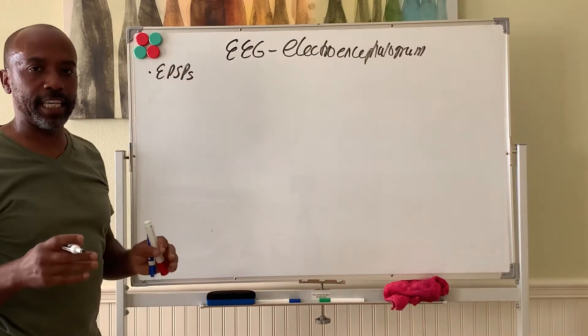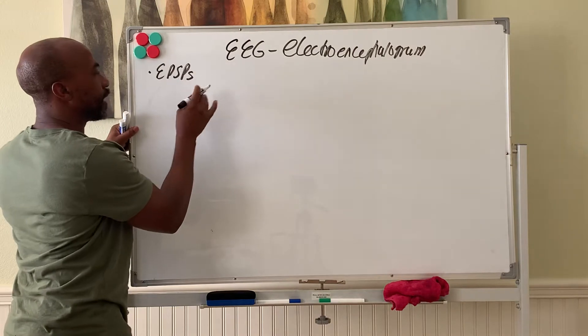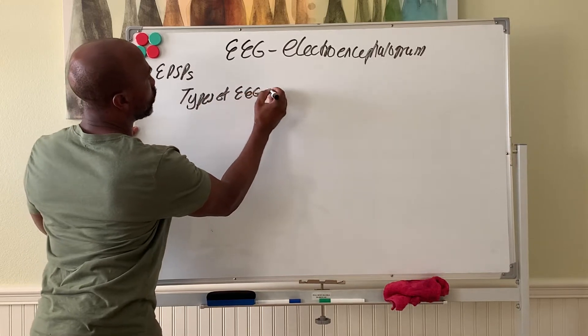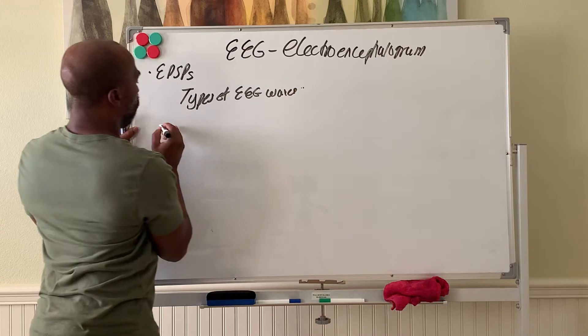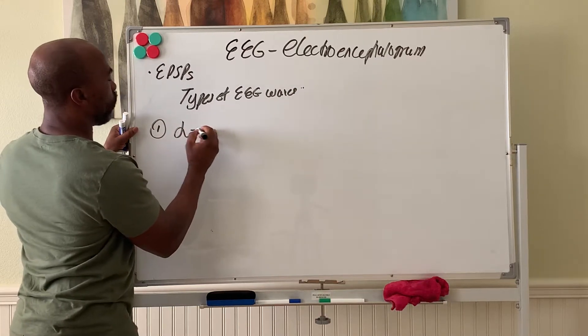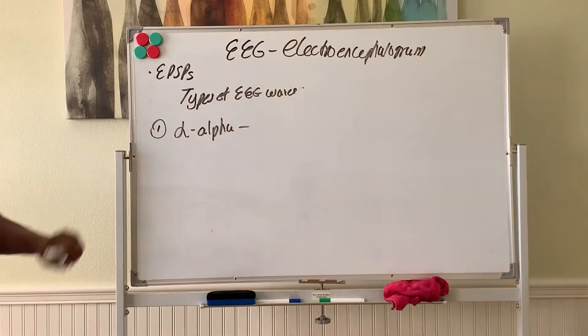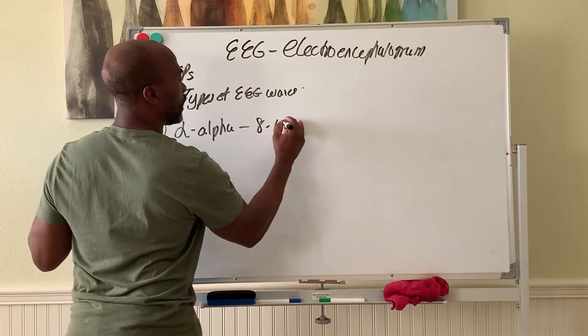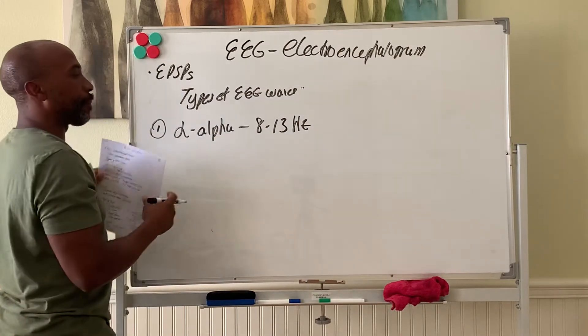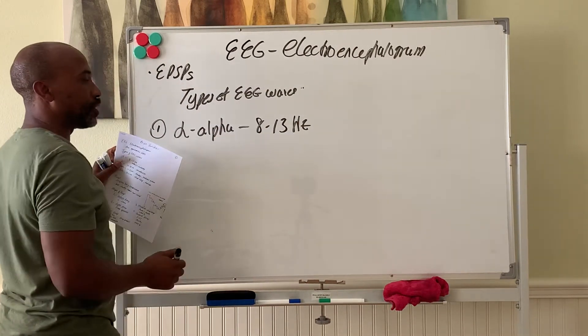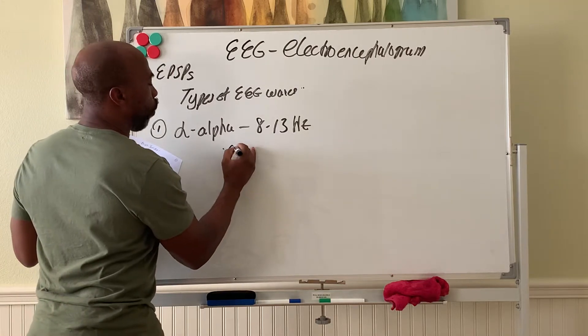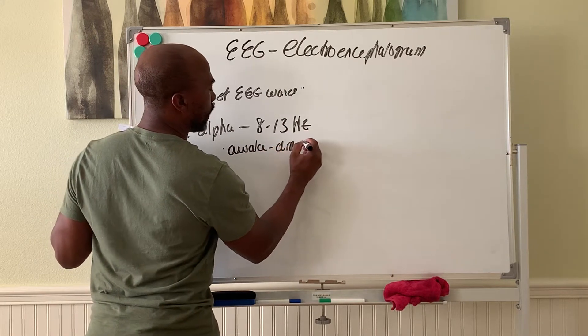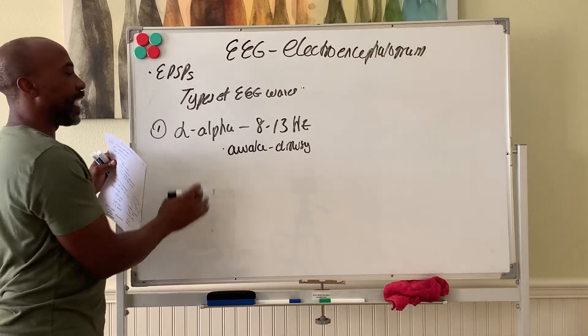There are four basic EEG wave types detected using this scanner. One, you have your alpha waves. Alpha waves pop in at 8 to 13 hertz, meaning they reappear around 8 to 13 times per second. That's their frequency. These are normally in awake individuals who are drowsy or drifting, the mind is wandering away. That's the alpha waves.